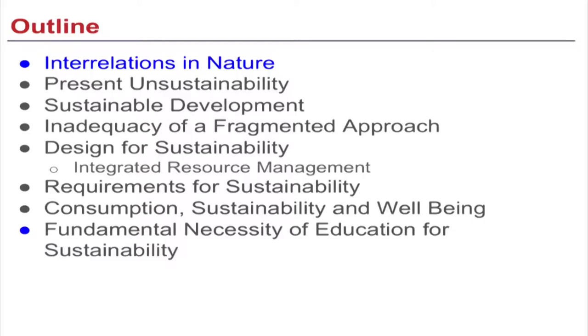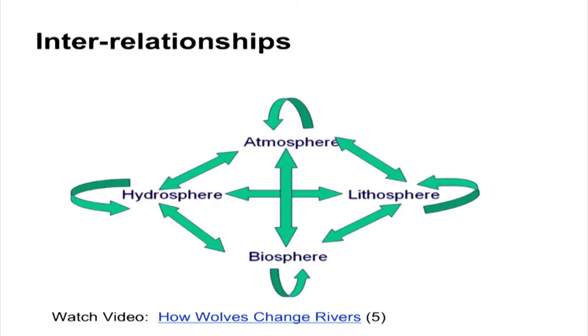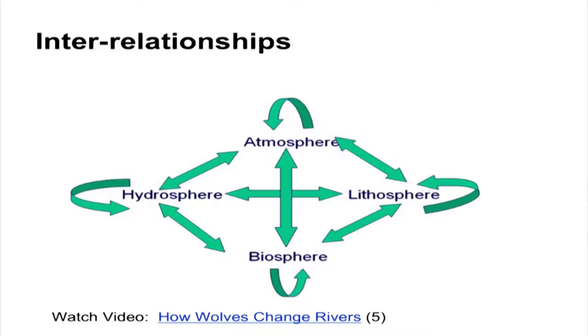Let's get right into the topic. This is the outline slide, which will keep repeating as we cover sections. In nature we have many interactions — there are various segments of nature, and within each segment we have interactions. For example, within the atmosphere there's a lot of chemistry and material flows happening, and the atmosphere is again interacting with the hydrosphere, which is interacting with the lithosphere, and so on.